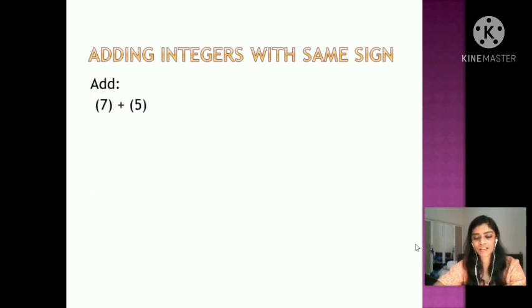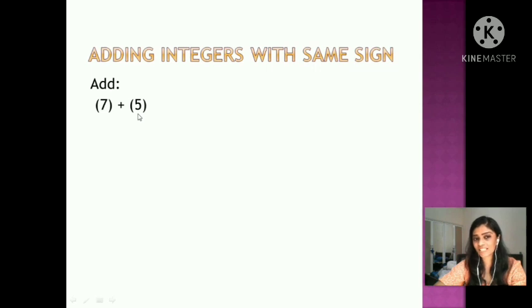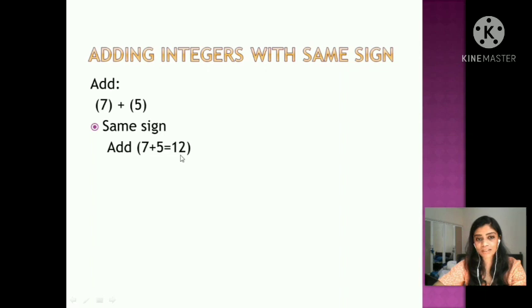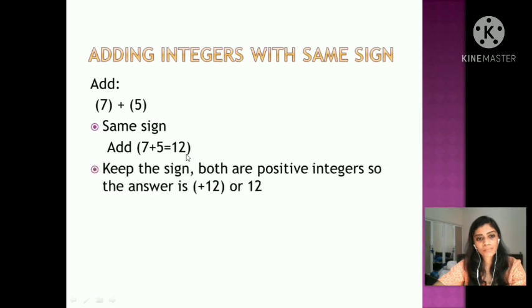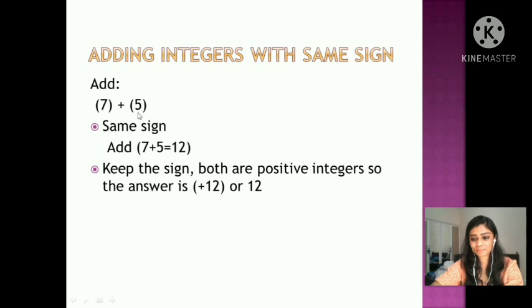Consider the next example: 7 plus 5. Recall the rule — identify whether the integers have the same sign or different sign. 7 and 5 are both positive integers, so they have the same sign. Add 7 and 5, which gives 12. Now keep the sign — since both are positive, the answer is plus 12, or simply 12. So 7 plus 5 equals 12.